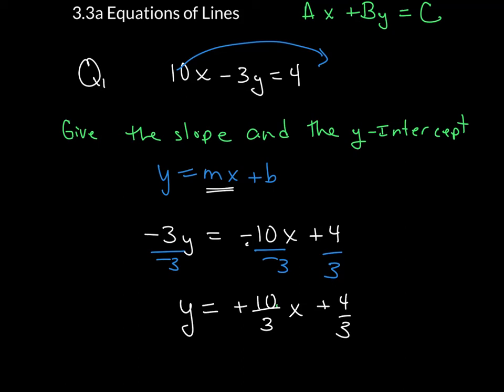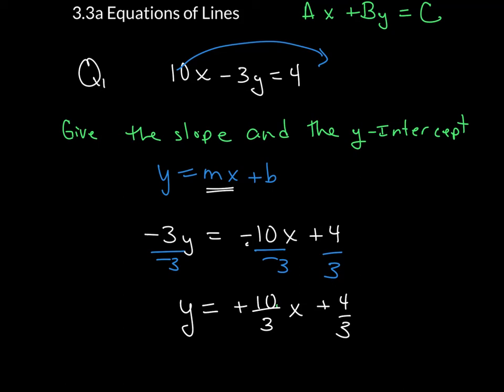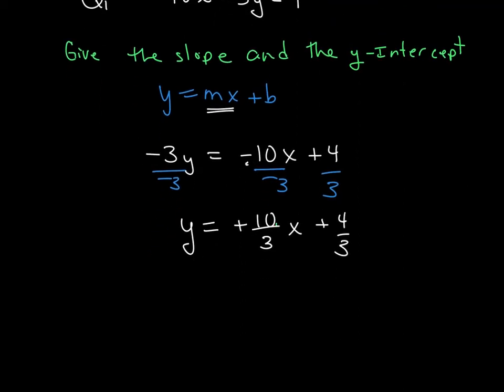When you put this into the equation, they're asking you for several pieces. They're asking what is the slope, and the slope is just 10 over 3. You don't include the x when you write that — it's a positive 10 over 3.